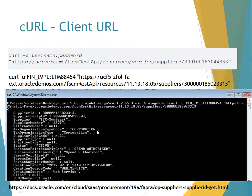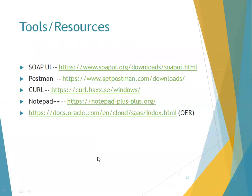All these tools — SoapUI, Postman, and curl — are free. One more very important resource is OER, Oracle Enterprise Repository, which contains information about tables, web services, FBDIs, and even implementation information like which module and how processes work in a particular module. Happy learning, thank you.